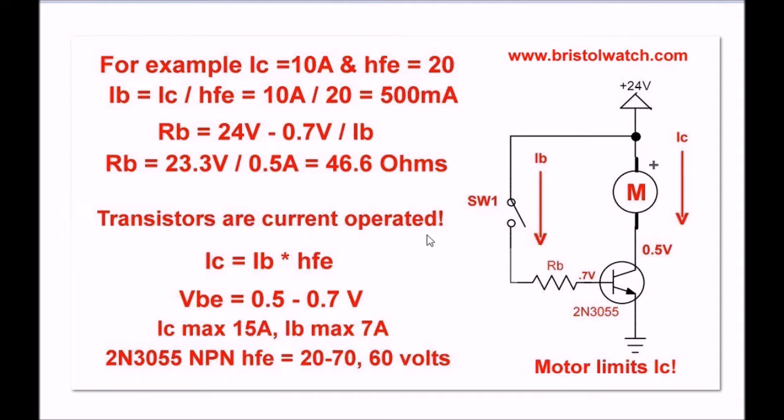They are not operated by voltage. They are operated by current. Again, IC, the collector current, is IB times HFE. The voltage base emitter will produce a drop of 0.5 to 0.7 volts. And the rest of this we got off the spec sheet. Since the 2N3055 is rated for 60 volts, 24 volts is no problem.